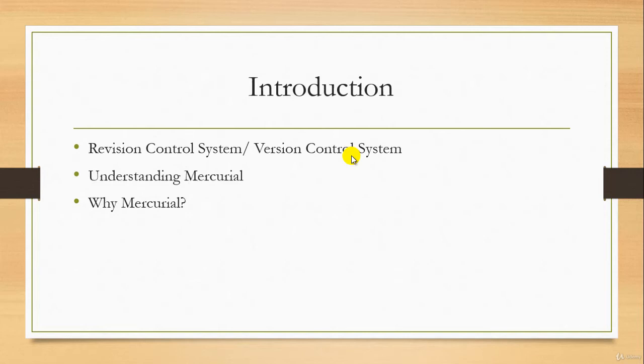Why is there a need for this? For example, when 50 developers are working on a project, there's a chance that two or three developers may work on the same file. So how do you manage the version of each developer? This is the scenario where you need to introduce a version control system or revision control system.